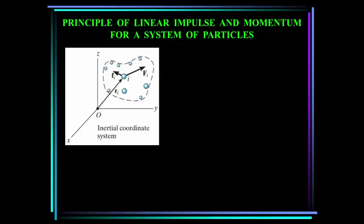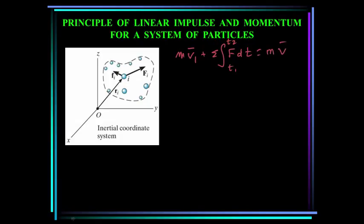First, a brief review of linear impulse and momentum for a single particle from chapter 15.1. This is similar to work and energy where you have an initial state and a final state, called states one and two. The equation from last lecture was that the momentum — mass times velocity at state one — plus the sum of all impulsive forces integrated over time equals mass times velocity at state two.